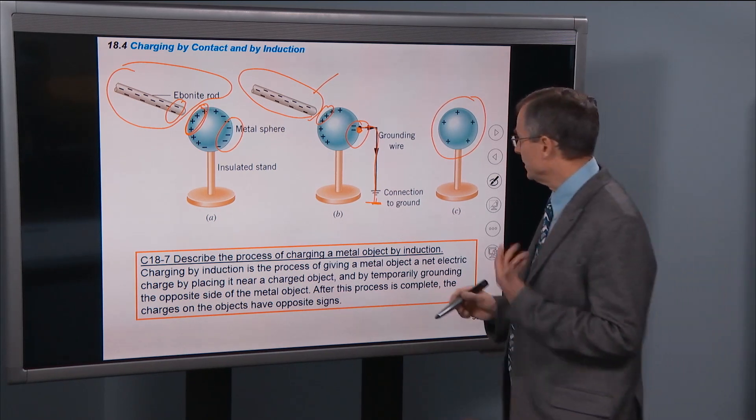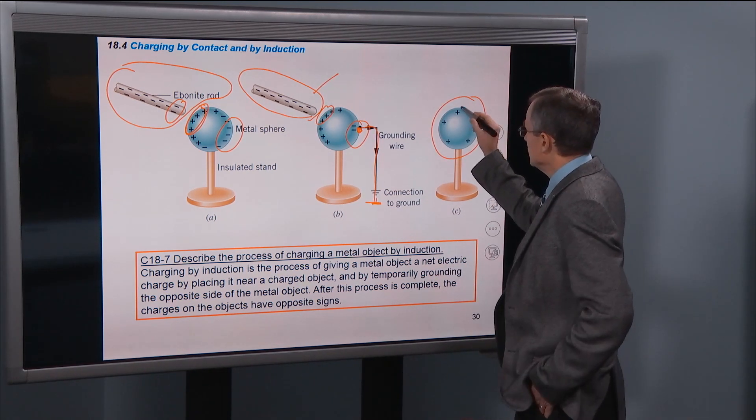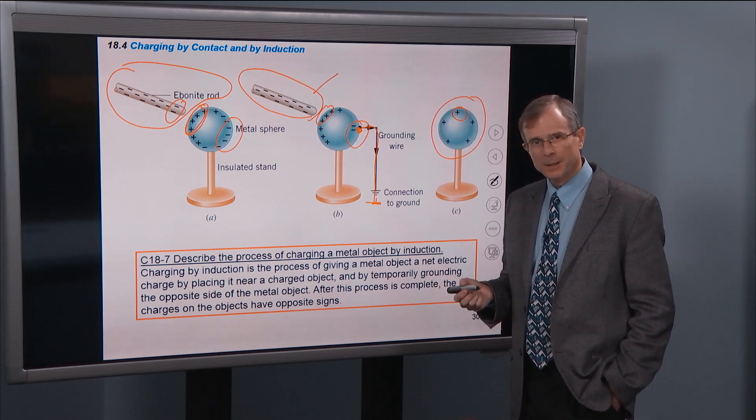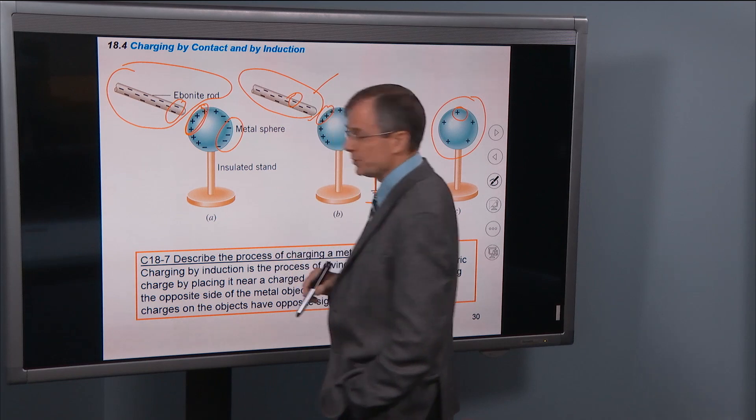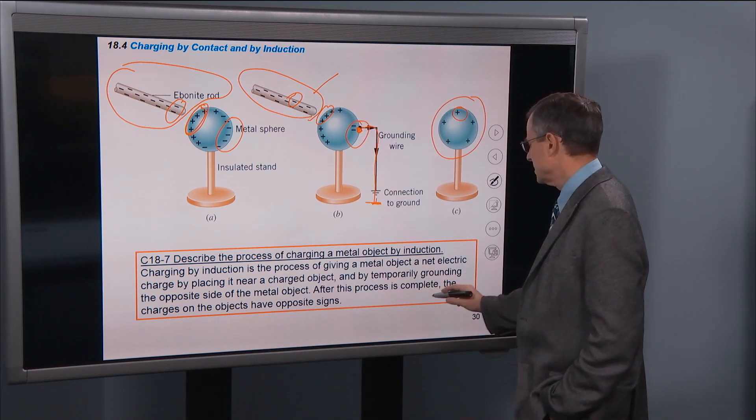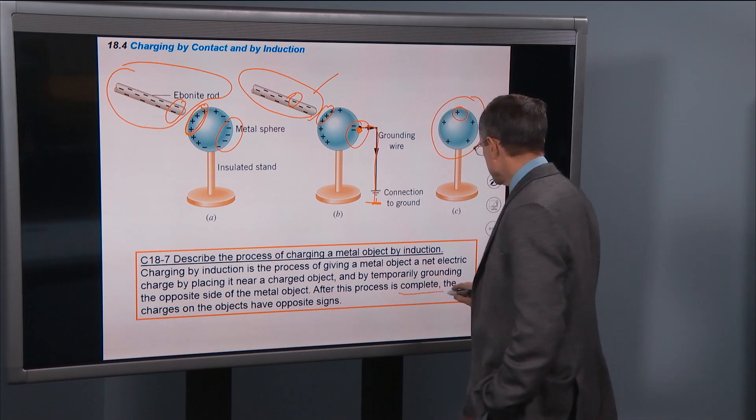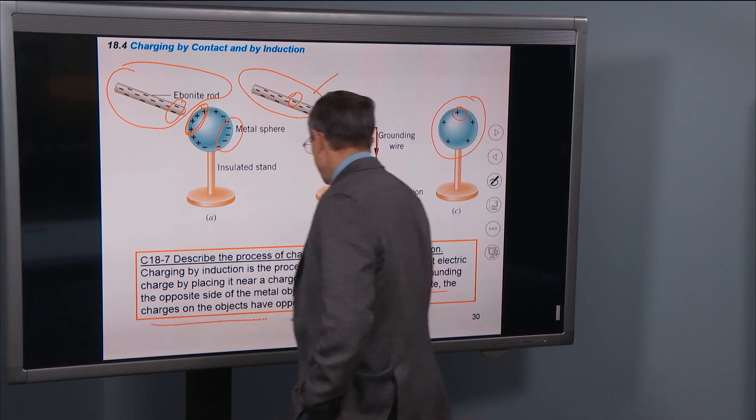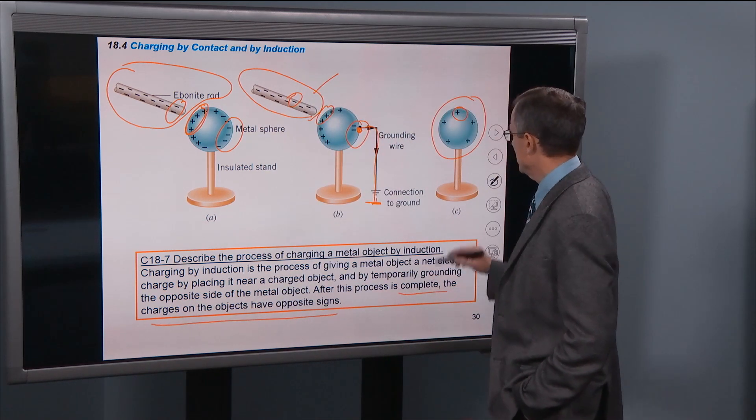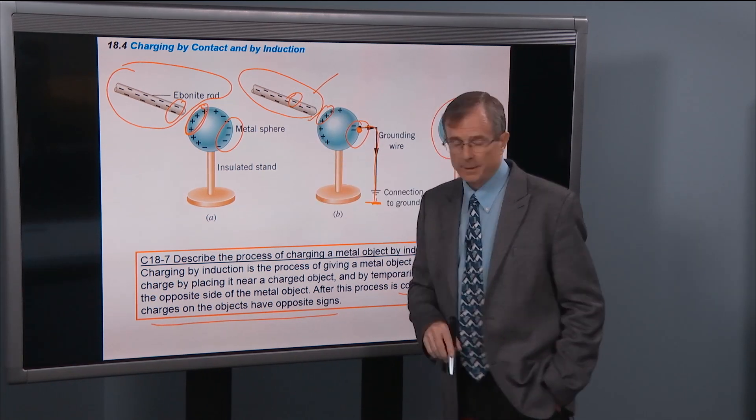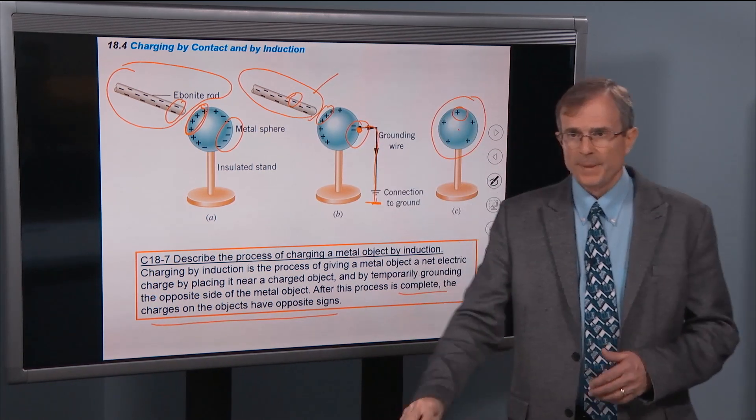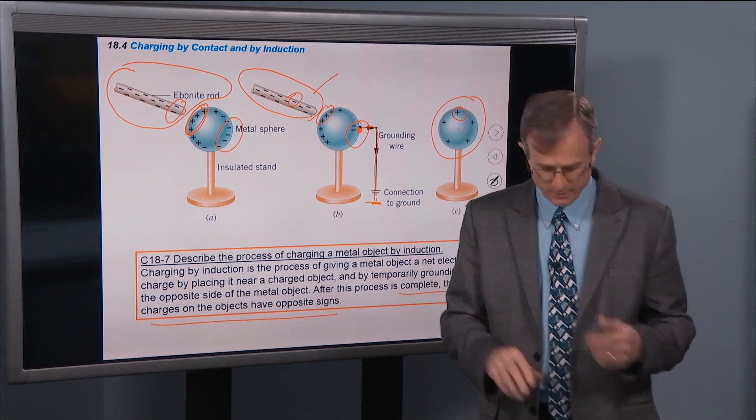And at the end of the day, what you've done is you've got an object that's charged positively now, the opposite of the charging object. So that's what this sentence means. After the process is complete, the charges on the object have opposite signs. Meaning the metal sphere has charges of the opposite sign to the charging object.